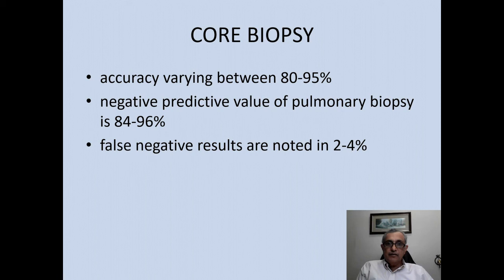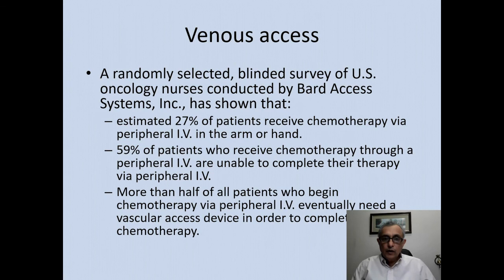This is the kind of result you get — this is a patient with adenocarcinoma of the lung. Core biopsy accuracies vary between 80 to 95 percent, with negative predictive values very high between 84 to 96 percent, and a low false negative rate of between 2 to 4 percent.